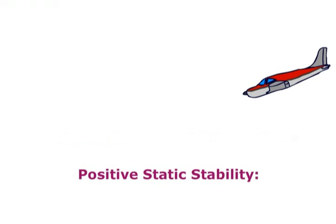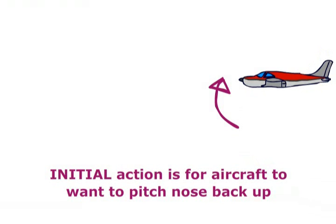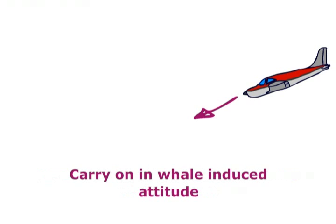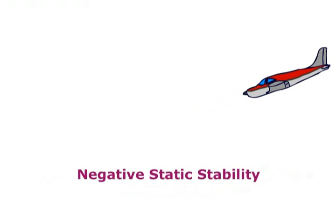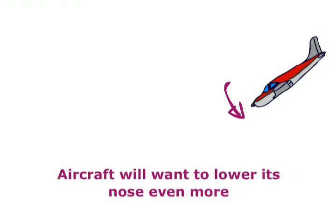If the aircraft has positive static stability, the initial action of the aircraft, having been knocked into the nose-down position, will be to put its nose up again. Neutral static stability will mean the aircraft doesn't do anything, it will carry on in its new whale-induced attitude. Negative static stability will mean that the aircraft will actually nose down even further. So that is static stability.